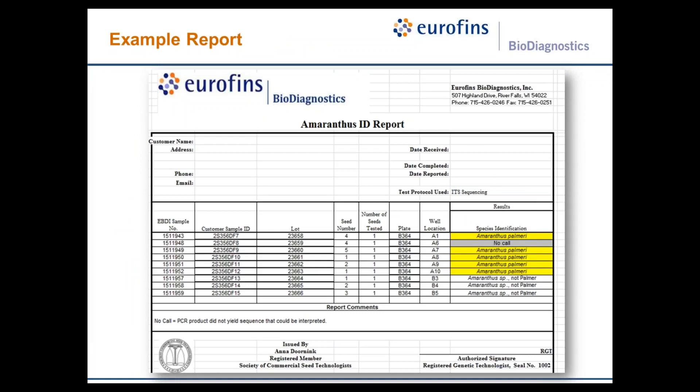You'd either get an identification of Amaranthus palmeri, or an identification of Amaranthus species, not Palmer. In some instances, we report no-calls if we aren't able to interpret the sequence from that seed. Since this is a single-seed testing method, we are not able to go back and retest that seed because it has been destroyed in the DNA extraction process. We have tried to repeat the PCR and sequencing; however, it usually doesn't change the result — a no-call originally will still come back as uninterpretable sequence, usually due to fungal contamination or low sequence quality.